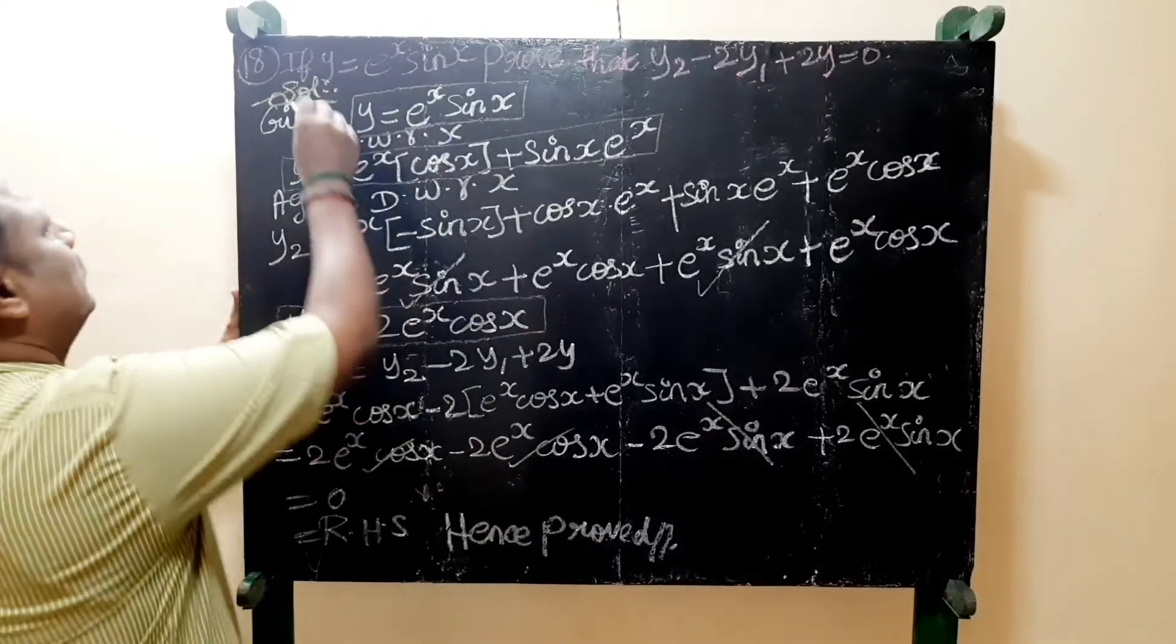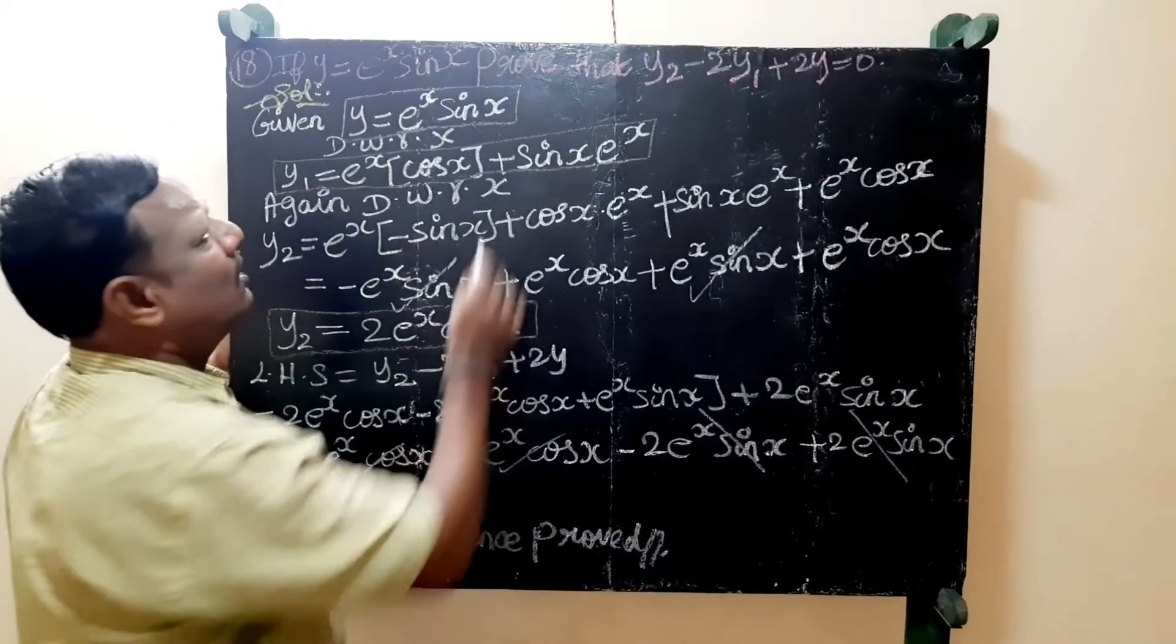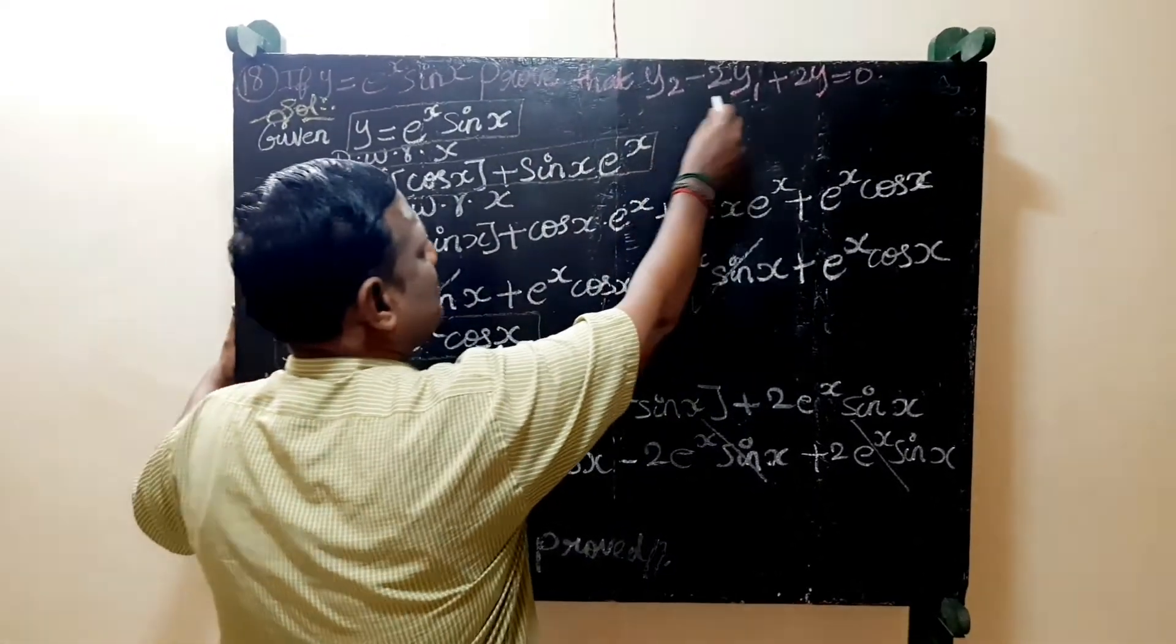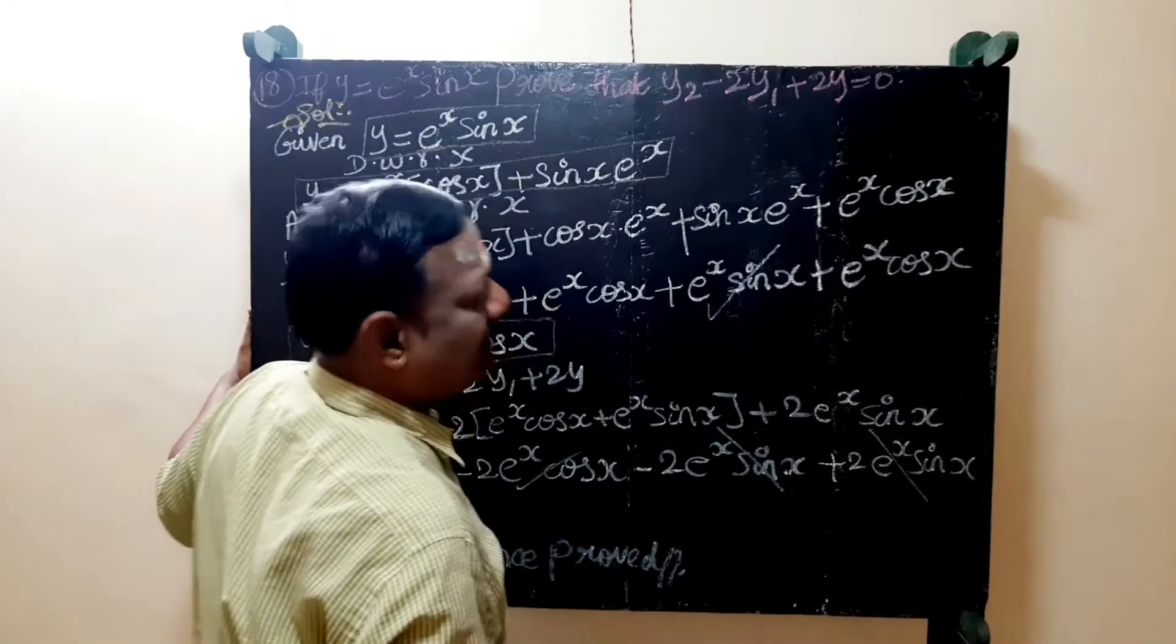Friends, if y is equal to e power x into sin x, prove that y suffix 2 minus 2 times y1 plus 2y equal to 0. So in this video, we'll solve this problem.